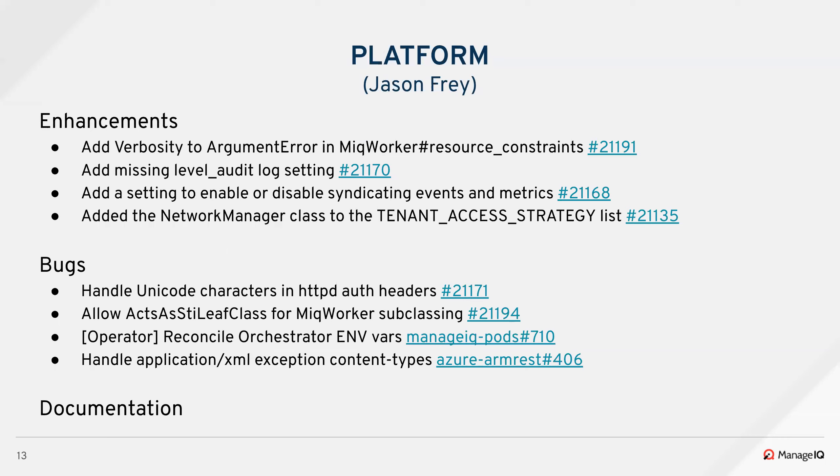On the platform side, we had a number of enhancements and bugs — here are the highlights. Oleg added verbosity to the resource constraints error message, so if somebody changes resource constraints and there are failures, we know which ones are actually causing the problems. I added a missing audit log level setting which we apparently never had in 10 years — now you can change the log level on the audit log. Adam added a setting to enable or disable syndicating events and metrics. Events and metrics syndication would happen automatically if you configured Kafka, but as we do more Kafka-based development, somebody might want to use Kafka internally but not syndicate the events and metrics. So we added a setting for that. Finally, Rutger added a network manager class to the tenant access strategy, which will allow for more tenant-based RBAC in the network and cloud volume classes.